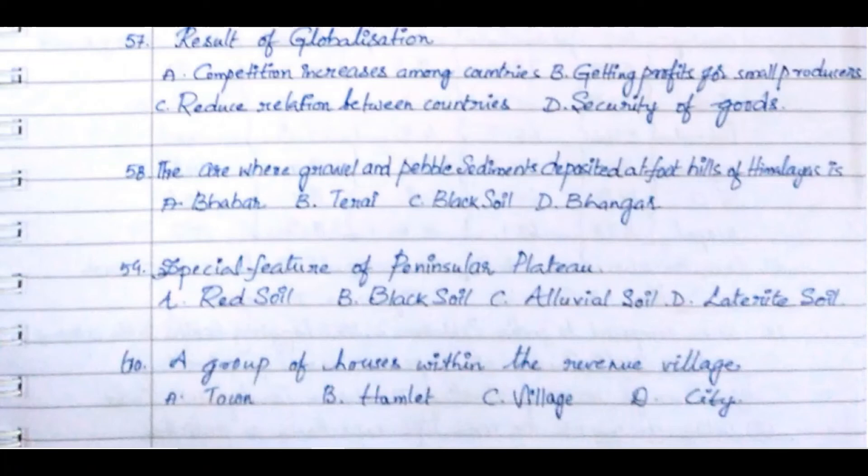Question 60: A group of houses within the revenue village. Option A. Town, Option B. Hamlet, Option C. Village, Option D. City. The answer is Option B. Hamlet.